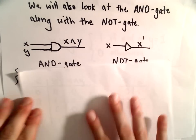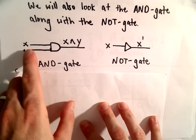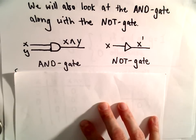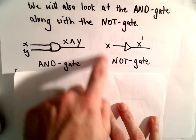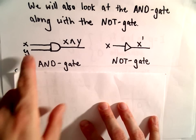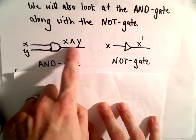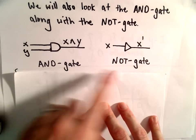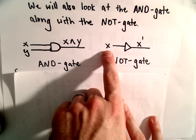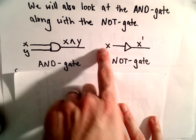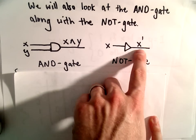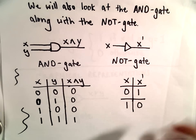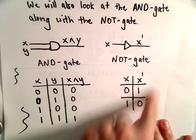A couple of other gates to look at: the AND gate and the NOT gate. The symbol for AND is a little upside-down v — notice it looks a lot like the intersection sign in logic. The inputs are x and y and the output is x AND y. The NOT gate has a single input x and gives you the complement: if x equals zero the output is one, and if x equals one the output is zero.